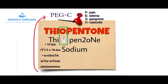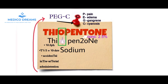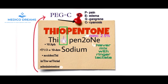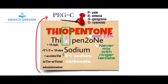Here, in place of the O, we have an onion image, meaning Thiopentone has an onion or garlic odour. We can also see the number 2, because the concentration used is 2.5%. The N says never mix with Ringer's Lactate, because when mixed with Ringer's Lactate it gets precipitated with calcium.